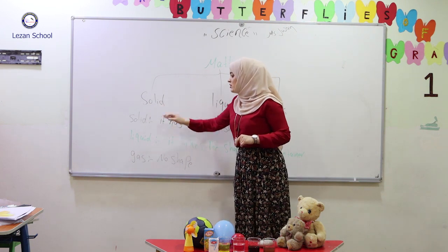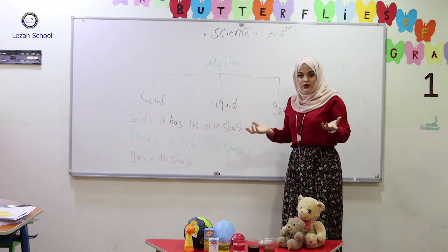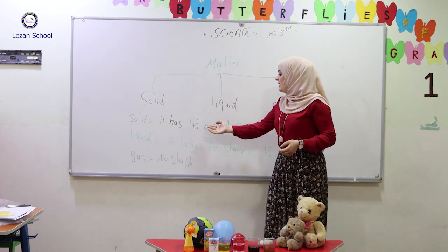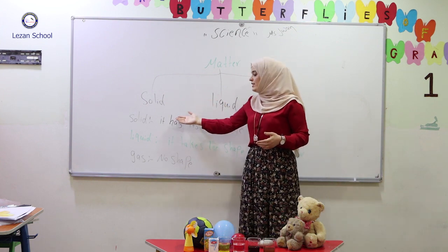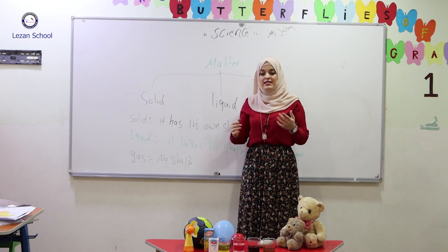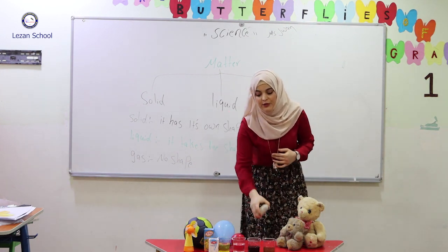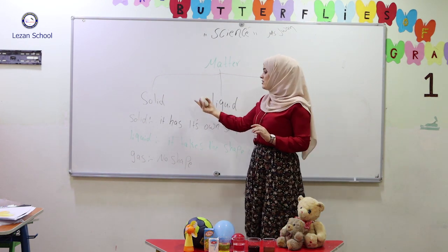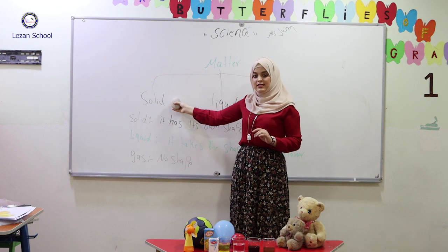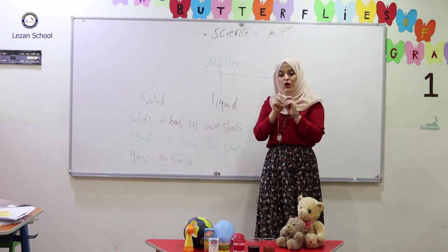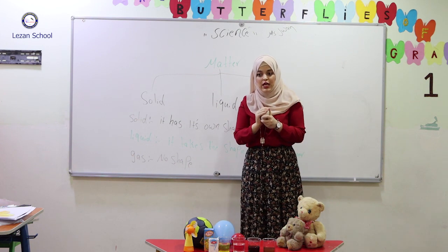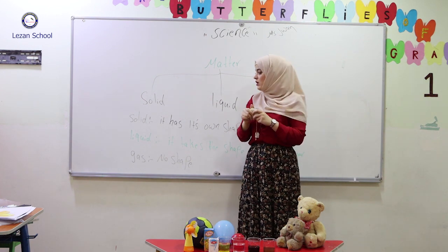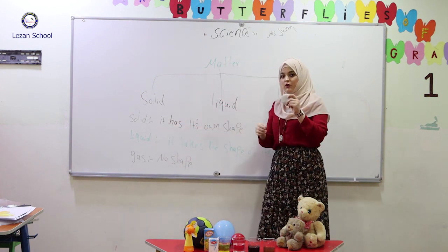What's solid? Solid is a matter. It has its own shape. For example, rock. Rock is solid. It has its own shape — I cannot change the shape. It is strong, hard or soft. It has its own shape.